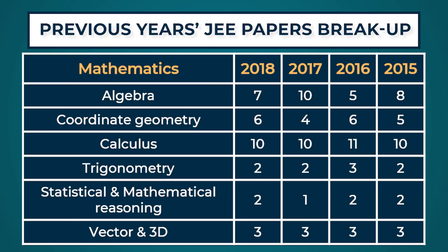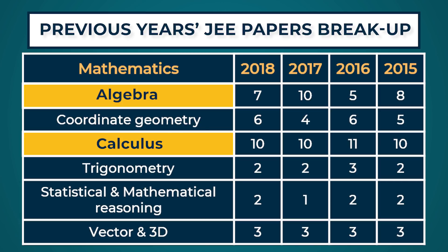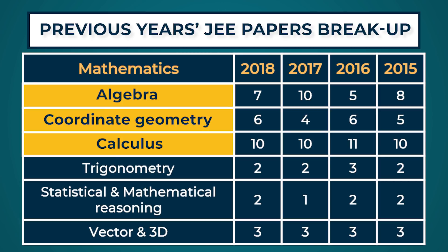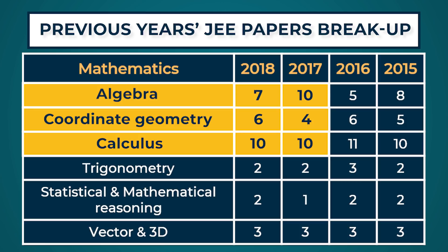Therefore, you need to analyze previous year Math papers carefully. When our experts analyzed the papers, it was revealed that the highest number of questions come from Calculus, then Algebra, and then Coordinate Geometry. In fact, one third of the paper is Calculus, so make sure you study Calculus thoroughly. Algebra and Coordinate Geometry also make up a major chunk of the paper, so do not skip these either.